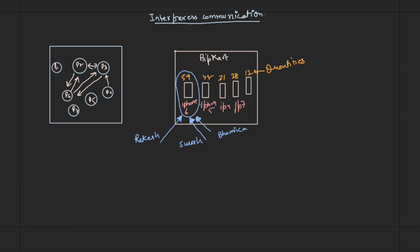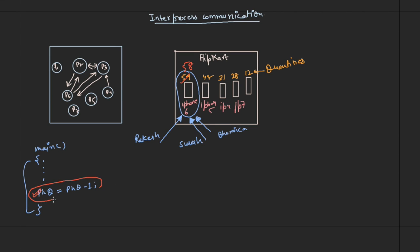This phone becomes a kind of shared resource or shared variable for all of them. For example, in the program you have a statement like: phone_quantity = phone_quantity - 1. If Rakesh is going to buy the phone, he will reduce the quantity to 58, and so on. These people can reduce the quantities.